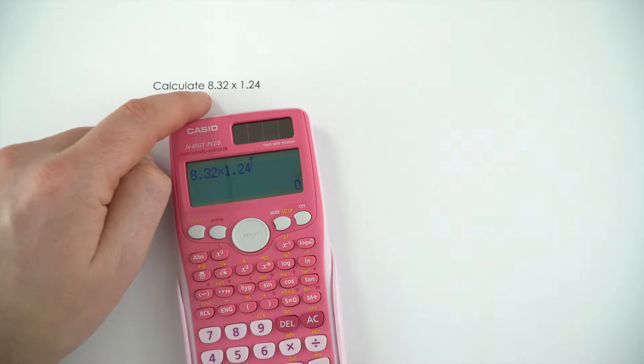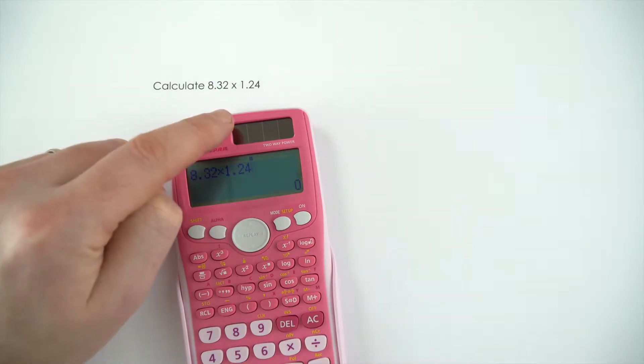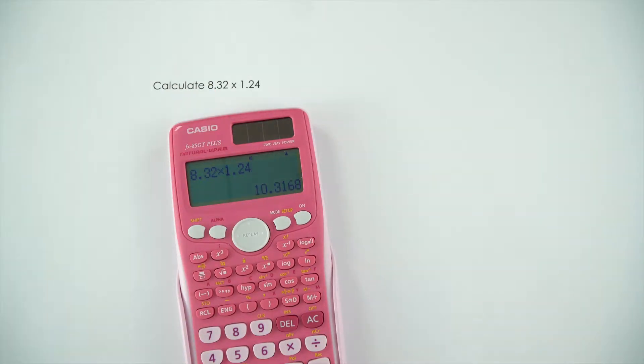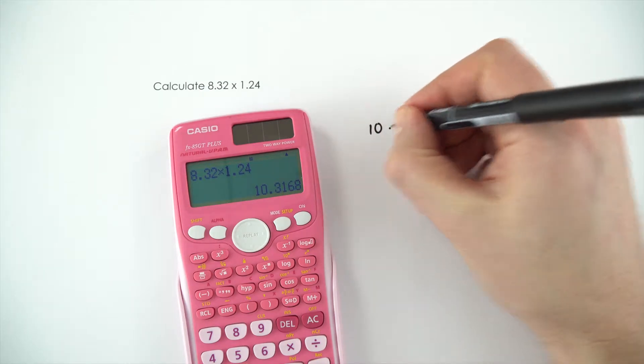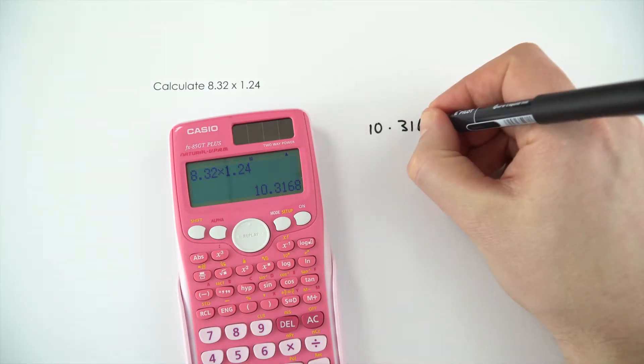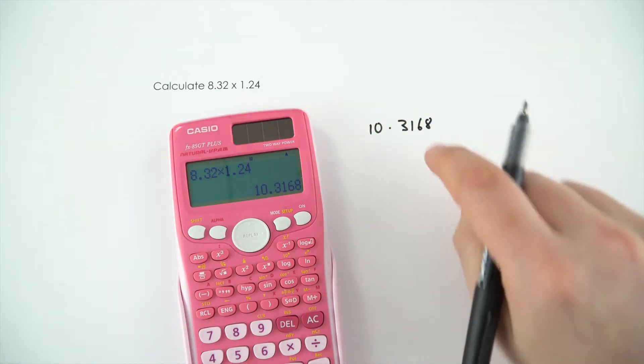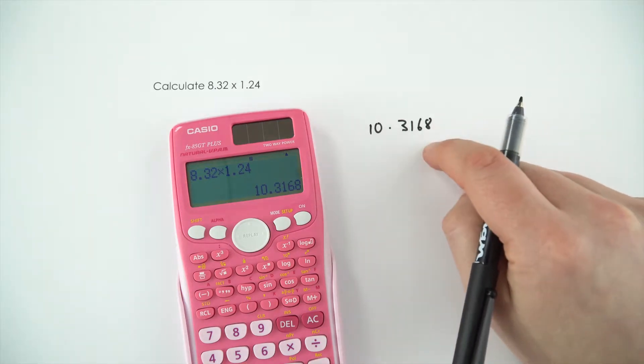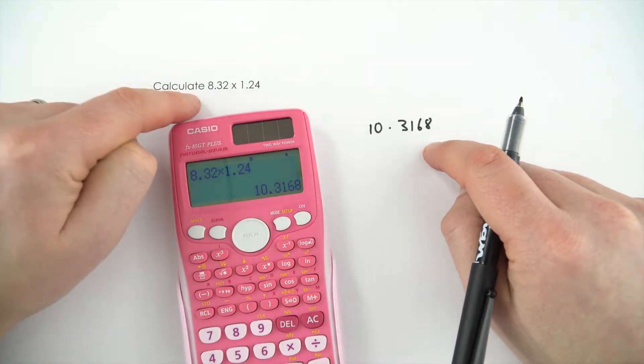So, in this calculation, we've got 8.32 multiplied by 1.24. Now, when we work this out in the calculator, the answer it gives is 10.3168. However, that's not necessarily the most appropriate way to actually write the answer to this question.